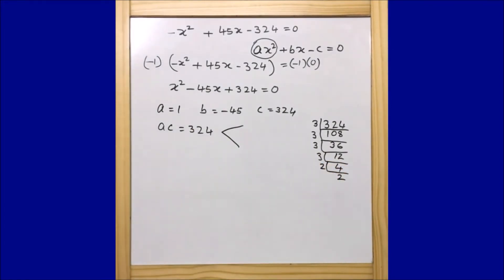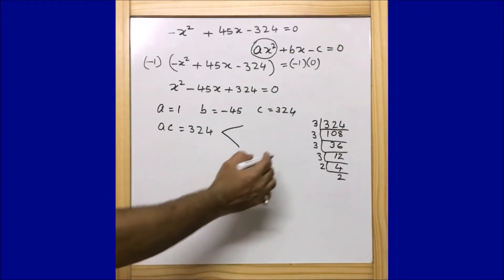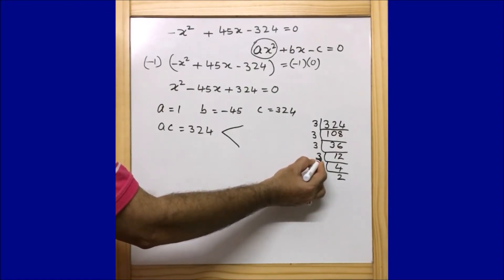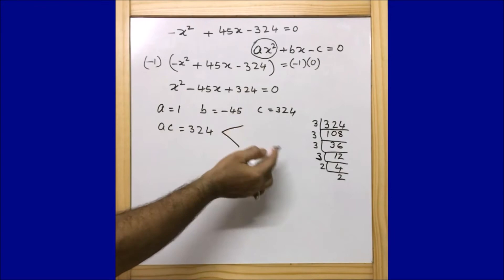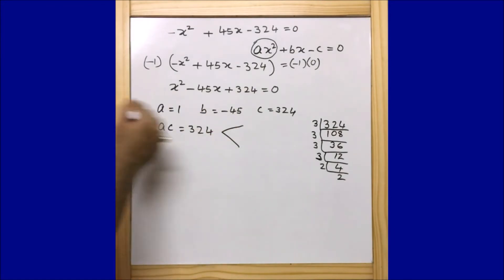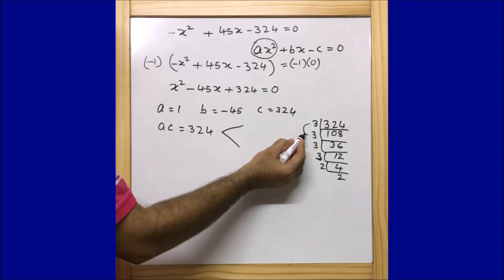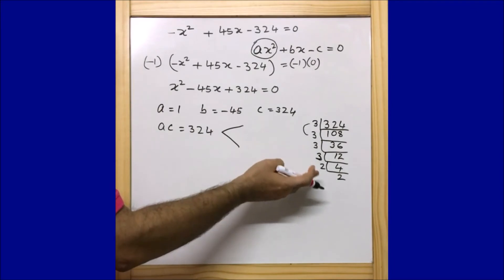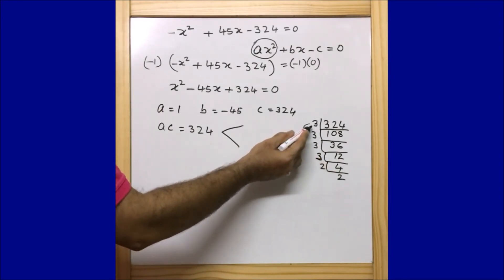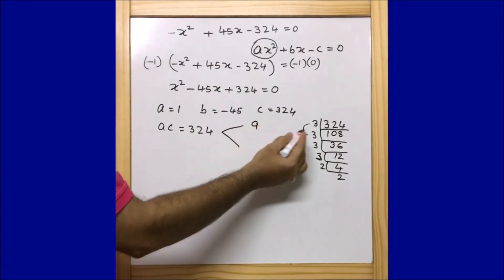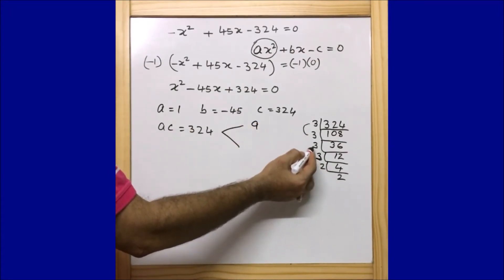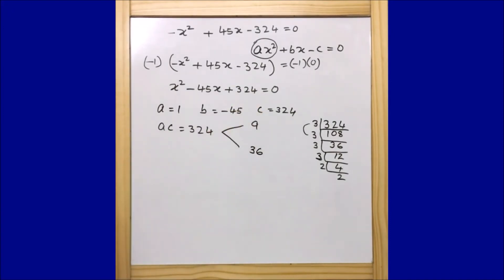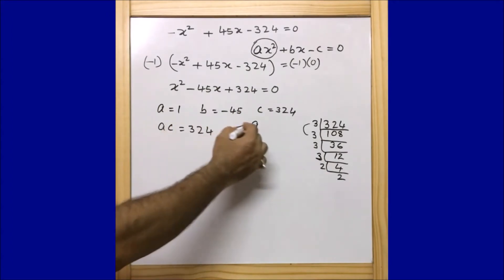We need two numbers whose sum is 45 and whose product is 324. From experience and practice you can find these. Taking 9 and 36: 36 plus 9 is 45. But we require negative 45, so we take minus 9 and minus 36.